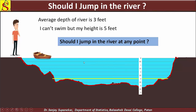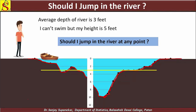If your height is 5 feet and the maximum depth is 4 feet, that might be manageable. But if the depth at some points is 7 feet or 8 feet, then even though the average depth is 3 feet, it is dangerous to cross. The average alone is not sufficient — you must also consider the variation or dispersion of the depths.